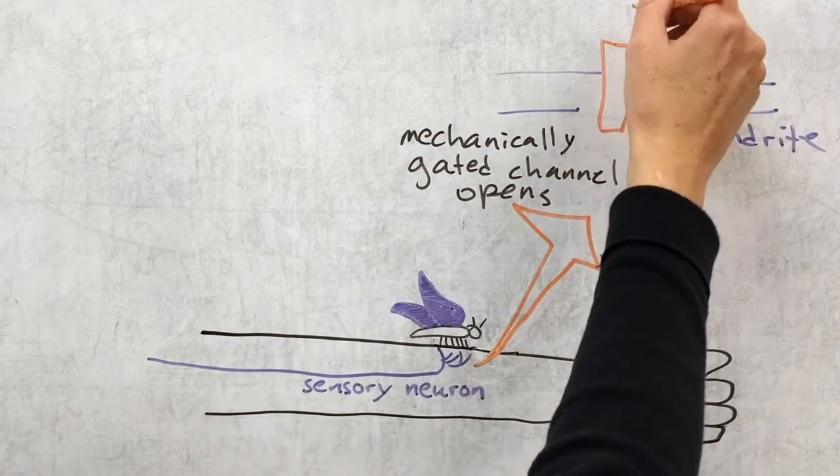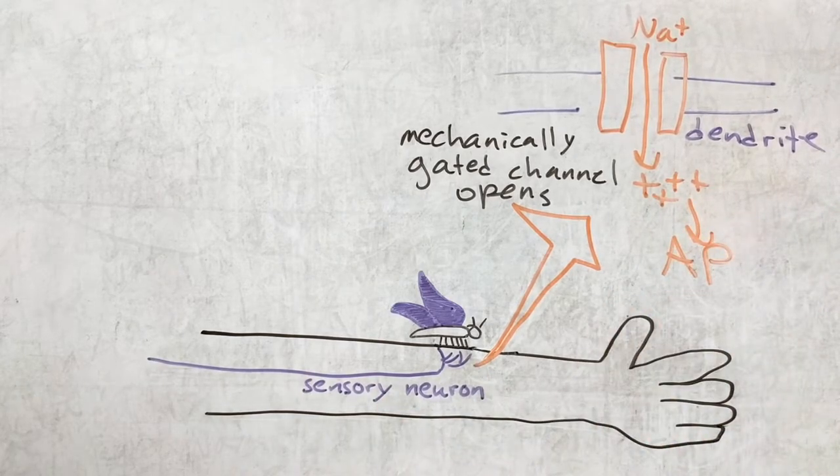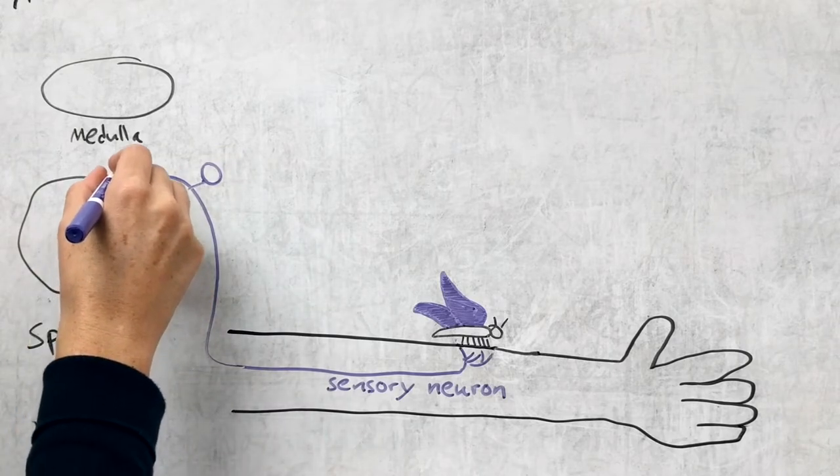Let's say the graded potential is big enough to get the neuron to the threshold and an action potential is initiated. The action potential travels through the axon into the spinal cord and all the way up to the medulla oblongata in the brainstem.